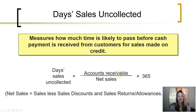If we take accounts receivable, divide by net sales, and multiply by 365, this is an estimate of how long it takes for a company to receive cash for credit sales.